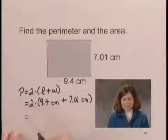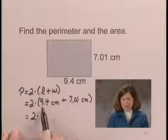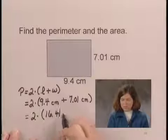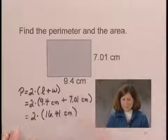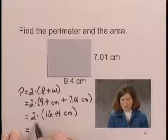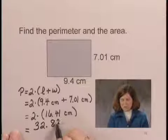And adding inside the parentheses, we have 2 times, adding 9.4 and 7.01, we have 16.41 centimeters. And multiplying 2 times 16.41, we have 32.82 centimeters.